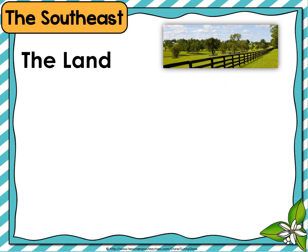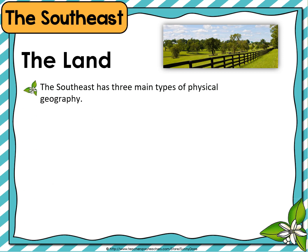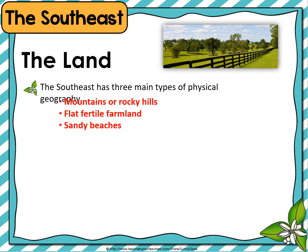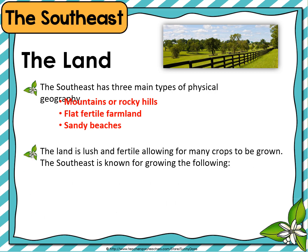The southeast — the land. The southeast has three main types of physical geography: mountains or rocky hills, flat fertile farmland, and sandy beaches. The land is lush and fertile, allowing for many crops to be grown.